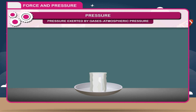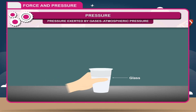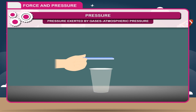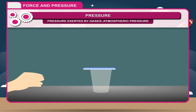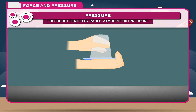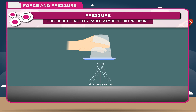Activity 2: To show air exerts pressure, take a glass tumbler and fill it with water. Place a cardboard on the tumbler and press it on the mouth so that there is no air left inside. Hold the tumbler and invert it upside down. When the cardboard is released, it does not fall because water exerts pressure downward and atmospheric air exerts pressure in the upward direction, which is much larger than the pressure of water.